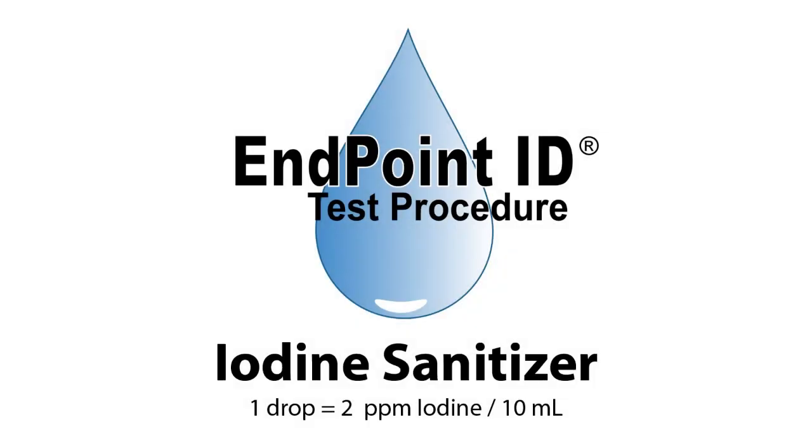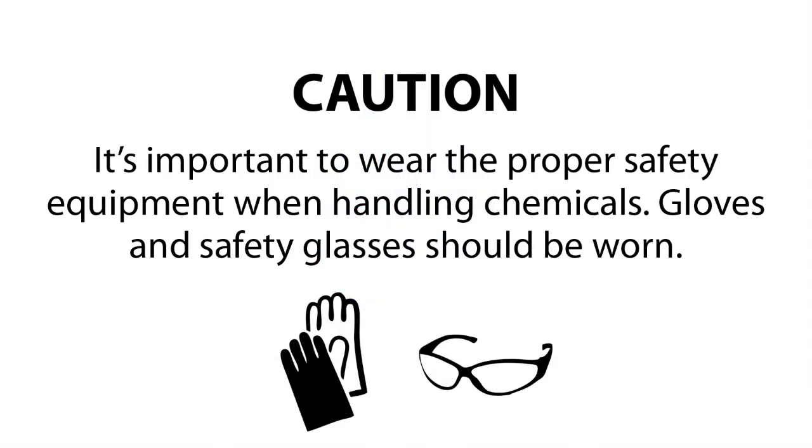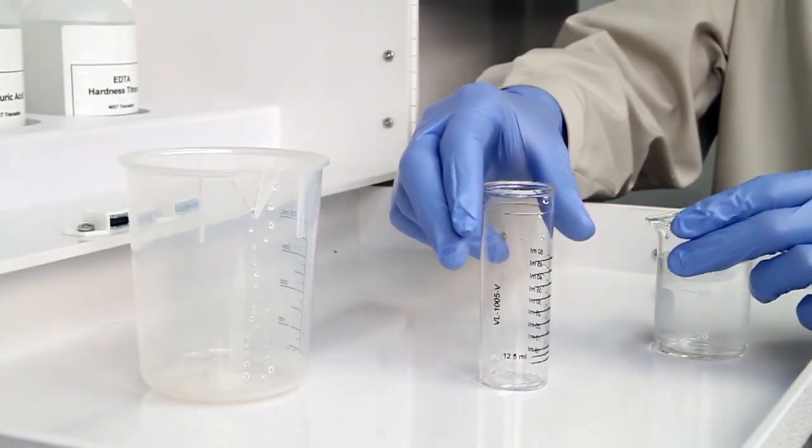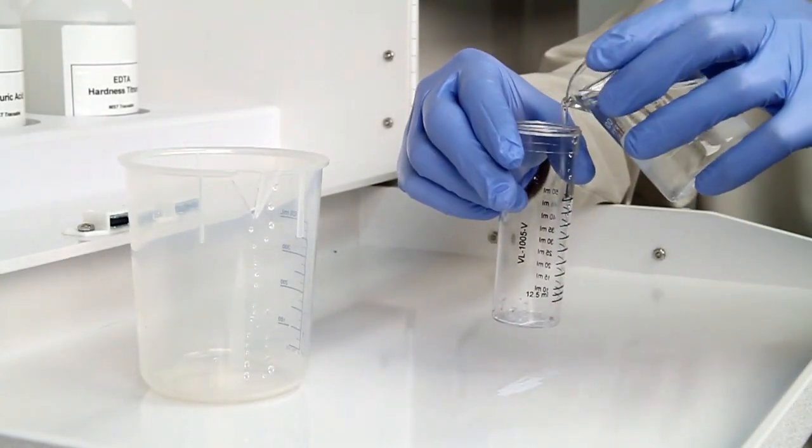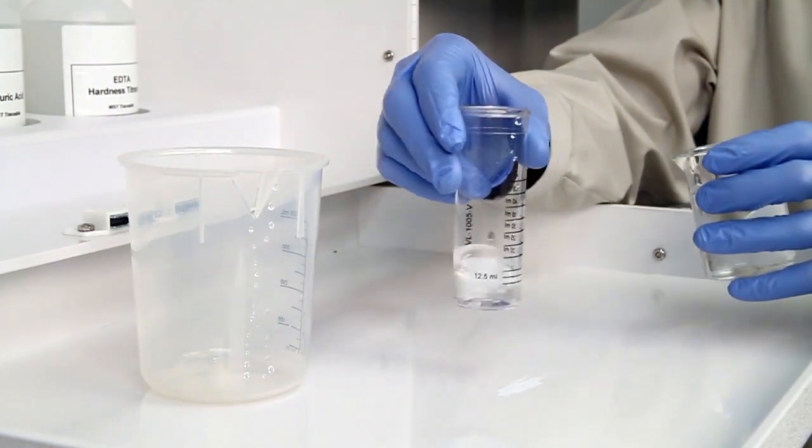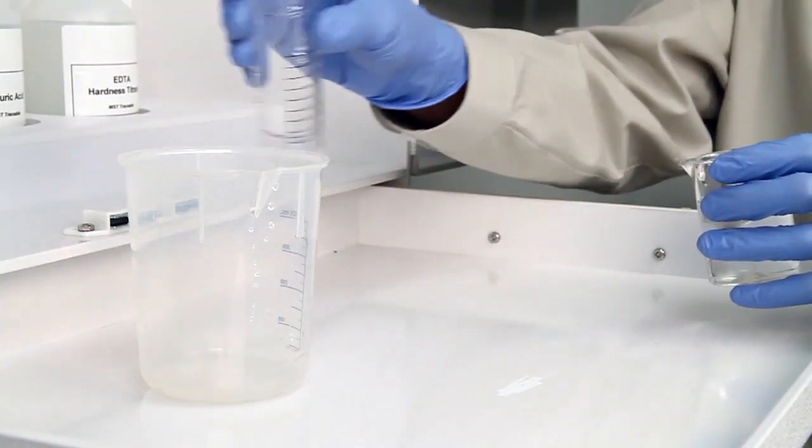This is a demonstration of the Iodine Sanitizer Drop Count Test Kit using Endpoint ID procedures. The first step according to the Endpoint ID procedure is to collect an accurate sample. The smallest change in sample size will lead to inaccurate results.